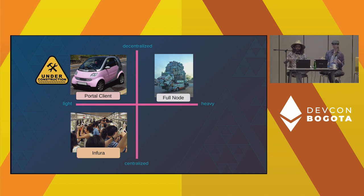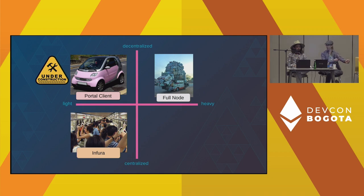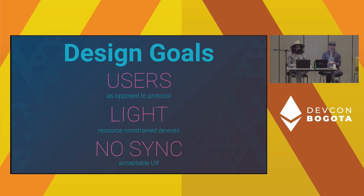If you want to interact with the blockchain right now, you either need to run your own full node — a very heavy process requiring a lot of resources — or you reach out to Infura, which is centralized access to the blockchain. That works fine, but centralization is kind of what we're trying to avoid. People have been working for many years trying to figure out something lightweight, accessible, and decentralized. Work on light clients has eventually led to this concept called the Portal Network.